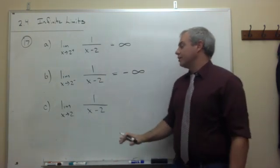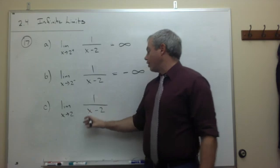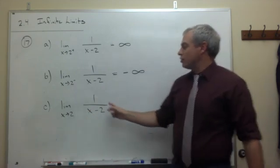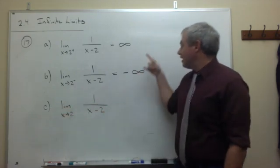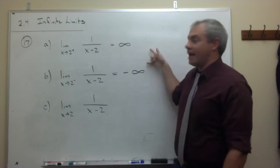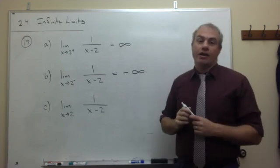Part c, the limit as x goes to 2 of 1 over x minus 2. Well, this is only going to exist if these two exist and they agree. They do exist, but they don't agree. So I can say that this one does not exist. And that's how we compute whether a limit coming at a vertical asymptote is positive infinity or negative infinity.